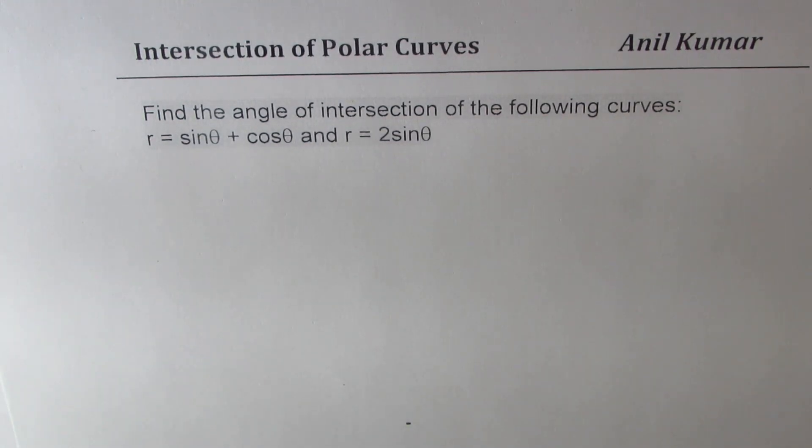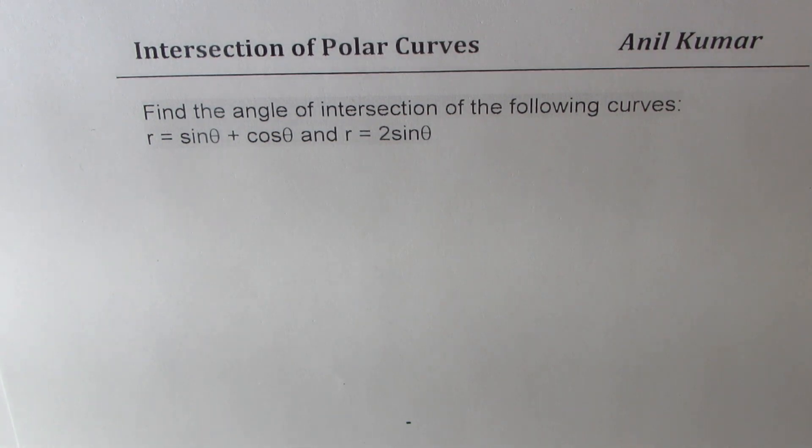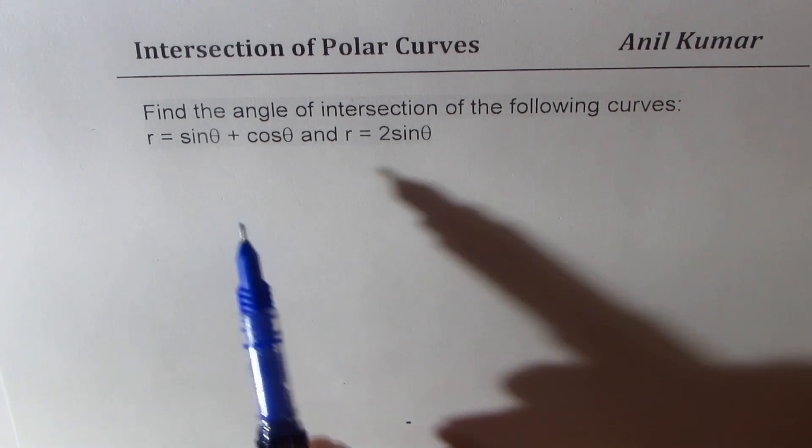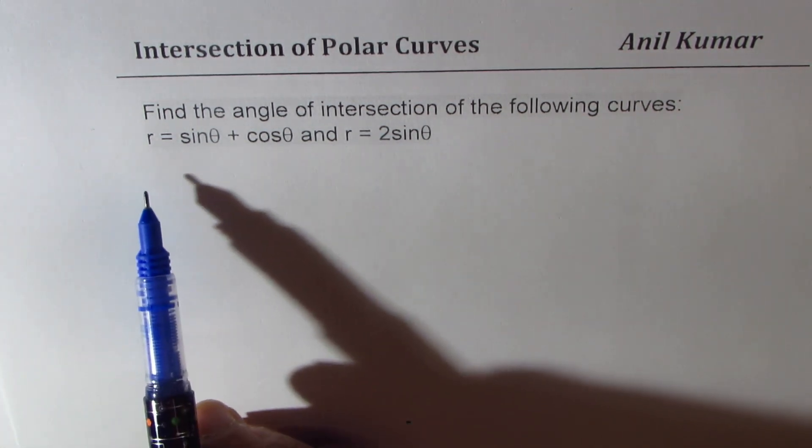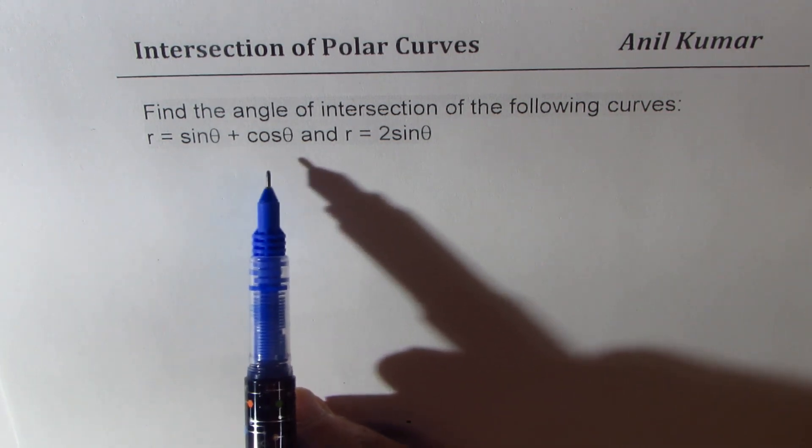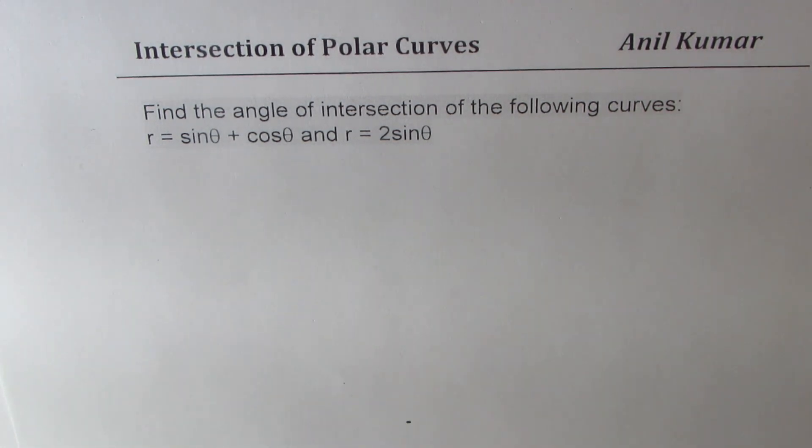I am Anil Kumar sharing with you a very important video about intersection of polar curves. We will now find angle between two intersecting curves. The question here is: find the angle of intersection of the following curves, r equals sine theta plus cosine theta and r equals 2 sine theta.